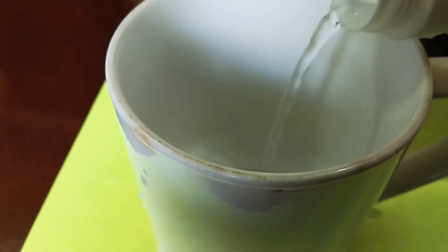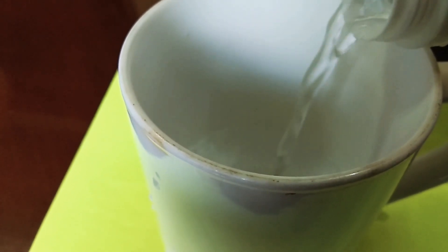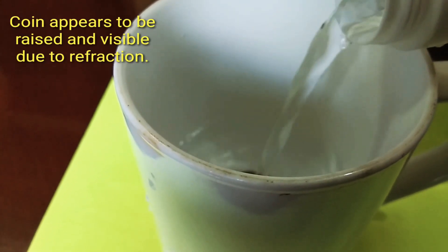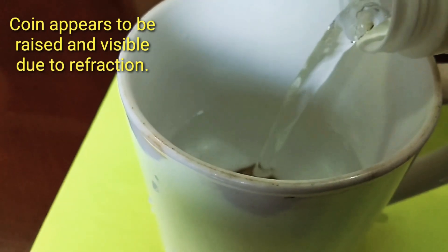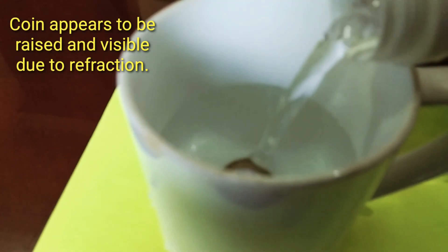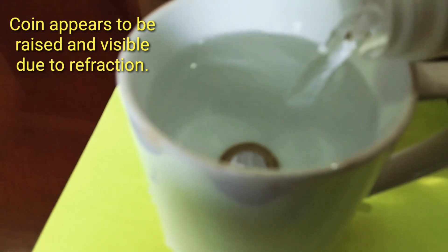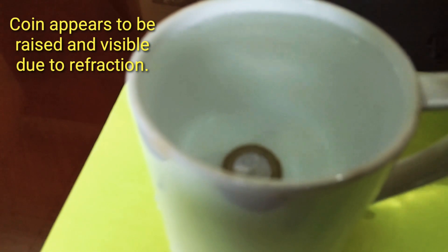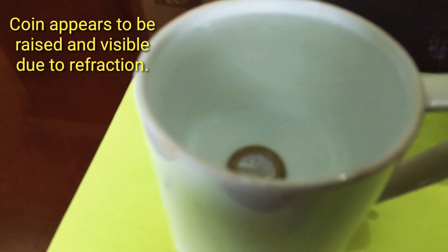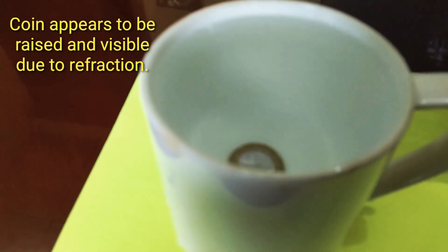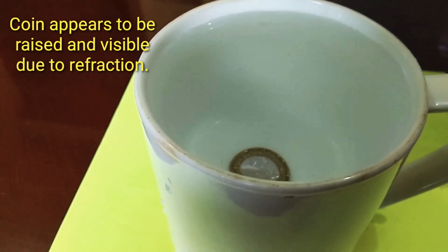So water is poured into the cup slowly. Slowly you can see the coin is again appearing. See keeping the camera at the same position, you can see the coin appears to be raised and it is visible. It's because of refraction.